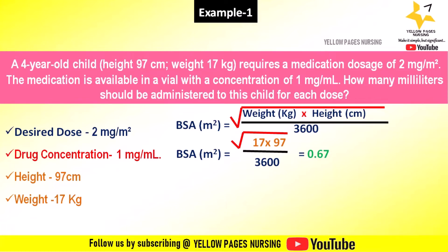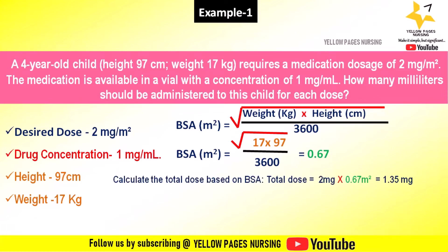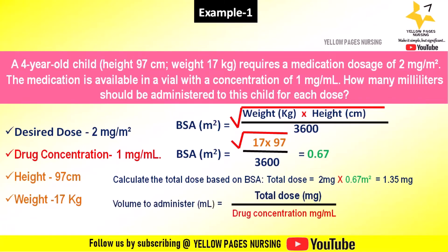The next step is calculating the total dose based on the body surface area obtained. The formula is: total dose equals 2 milligrams multiplied by BSA. That is 2 multiplied by 0.67, which gives 1.35 milligrams.